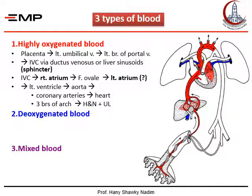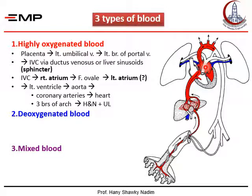From the ascending aorta, the two coronary arteries supply highly oxygenated blood to the heart itself, and from the arch of aorta the three big branches — the brachiocephalic, left common carotid, and left subclavian — supply blood to the head and neck, containing the growing brain, and the two upper limbs. So the most important structures receive highly oxygenated blood, though mixed with a little unoxygenated blood from the inferior vena cava and very little from the lungs.